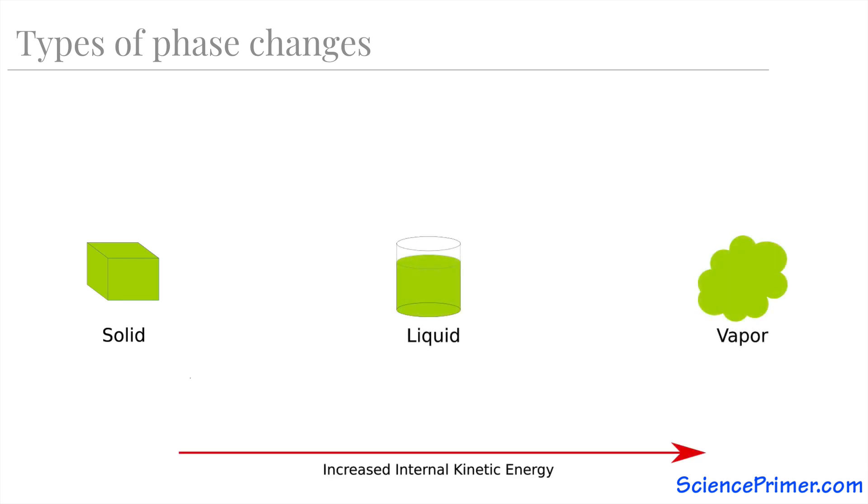Material in each phase of matter contains different amounts of internal kinetic energy. Specifically, in order for matter to transition from a solid to a liquid and then from a liquid to a vapor, it must absorb energy from the surrounding environment.